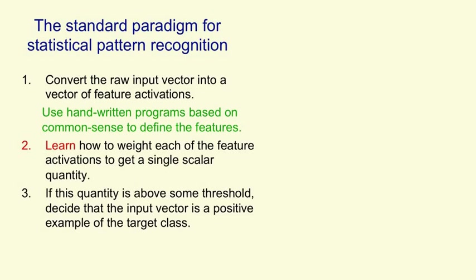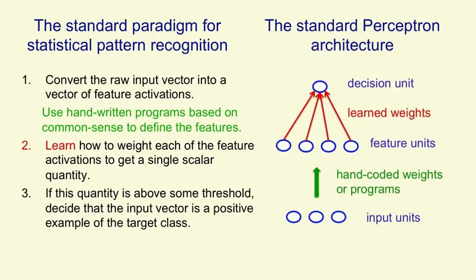A perceptron is a particular example of a statistical pattern recognition system. There were actually many different kinds of perceptron, but the standard kind, which Rosenblatt called an alpha perceptron, consists of some inputs which are converted into feature activities — that stage does not learn. Once you have the feature activities, you learn some weights, and you decide whether an input is an example of the class by seeing whether the sum of feature activities times learned weights is greater than a threshold.